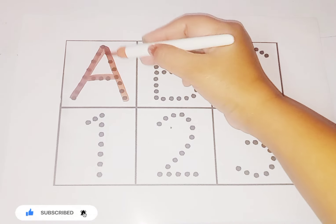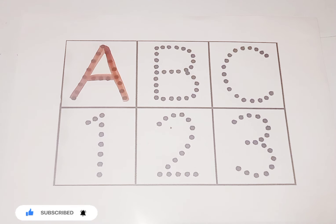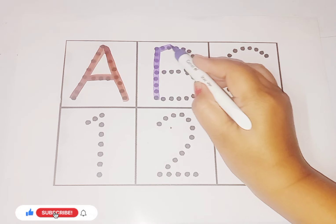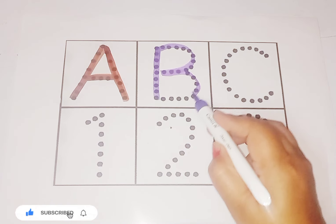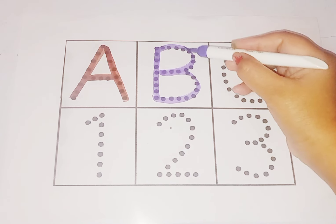Letter A sound is a, a. Purple color letter B. B for banana. B for banana. Letter B sound is b, b, banana.